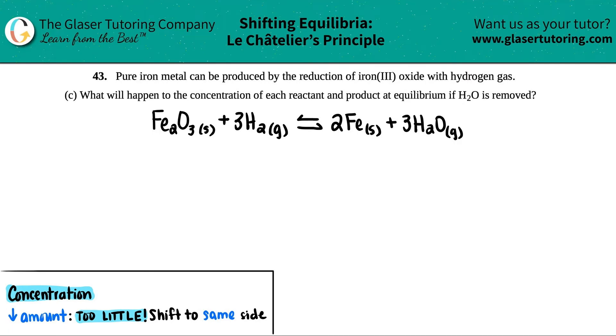Number 43: Pure iron metal can be produced by the reduction of iron(III) oxide with hydrogen gas. Letter c asks what will happen to the concentration of each reactant and product at equilibrium if H₂O is removed?